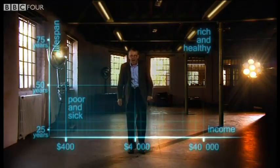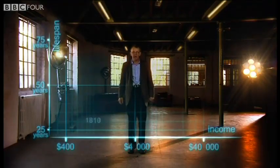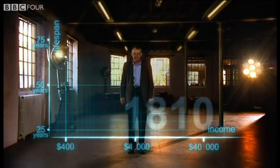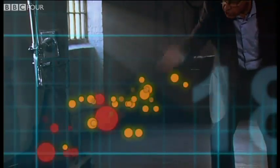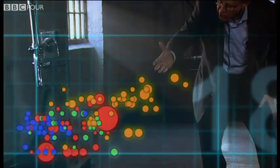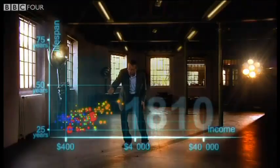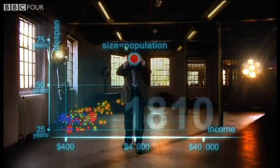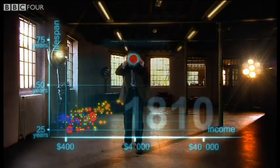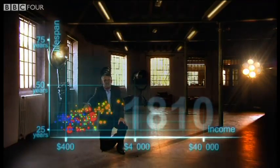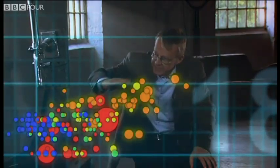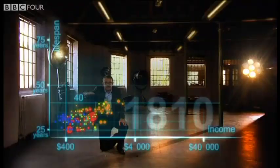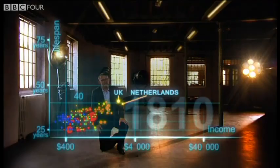Now I'm going to show you the world 200 years ago in 1810. Here come all the countries: Europe brown, Asia red, Middle East green, Africa south of Sahara blue, and the Americas yellow. The size of the country bubble shows the size of the population. In 1810 it was pretty crowded down there — all countries were sick and poor. Life expectancy was below 40 in all countries, and only the UK and the Netherlands were slightly better off, but not much.